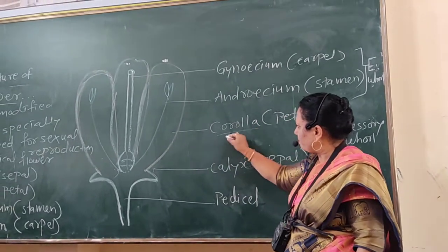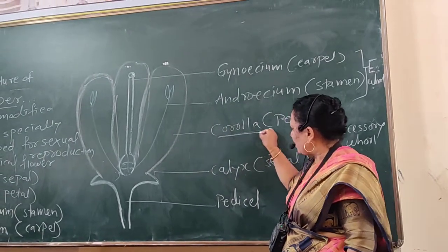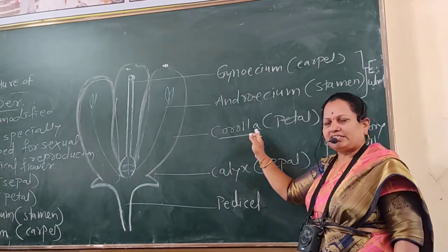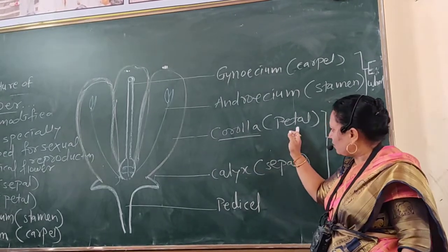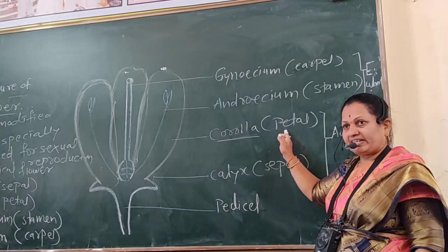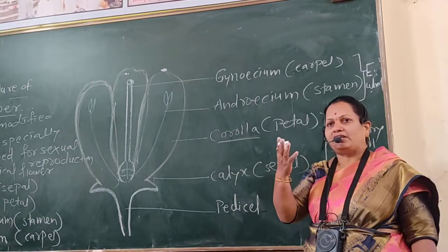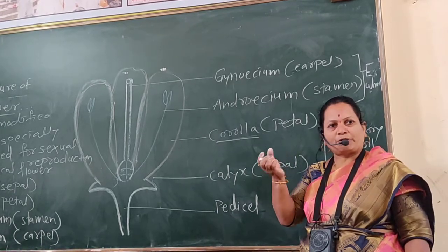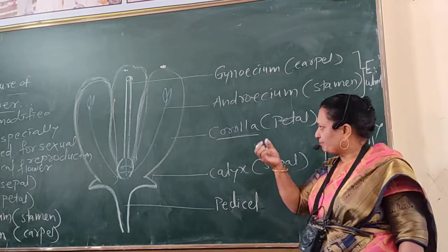The next floral whorl of the flower is called the corolla. Corolla consists of individual parts called petals. Petals are bright in color to attract insects for pollination.